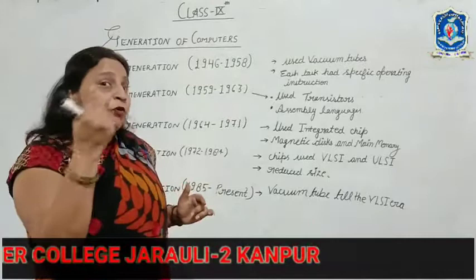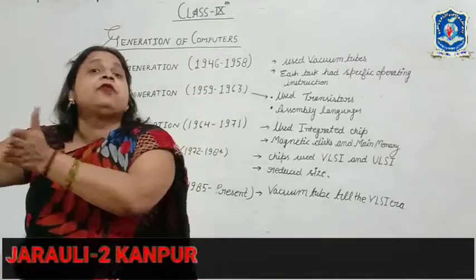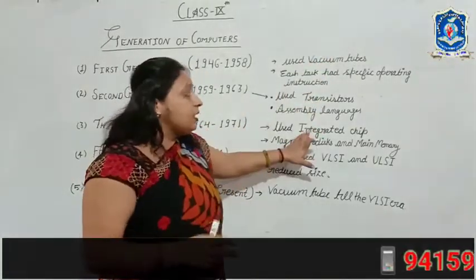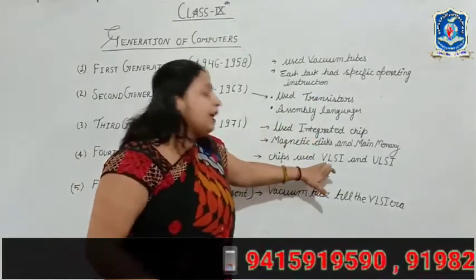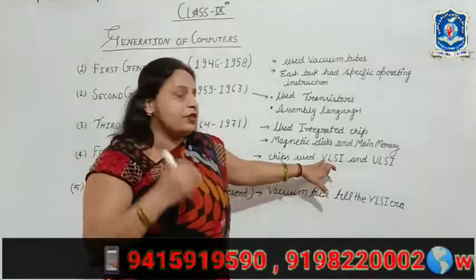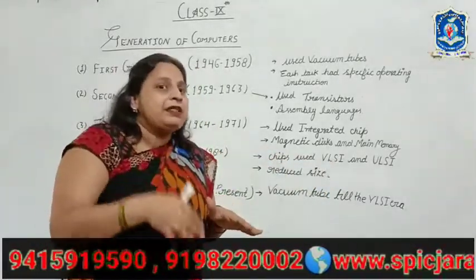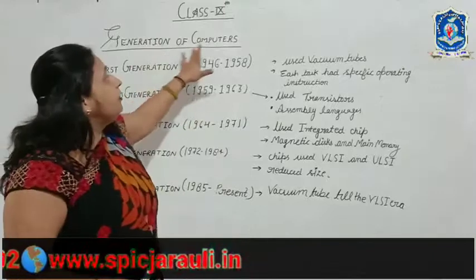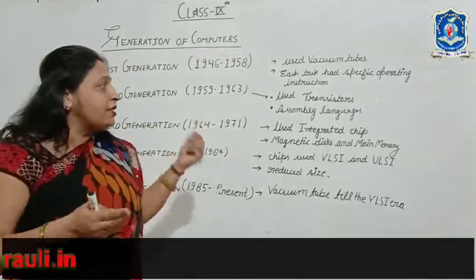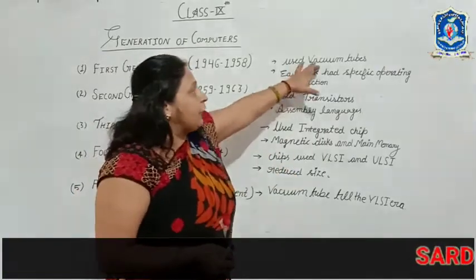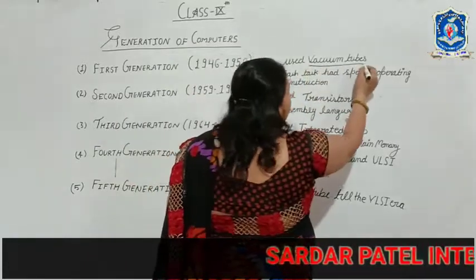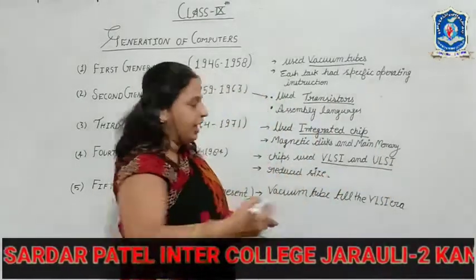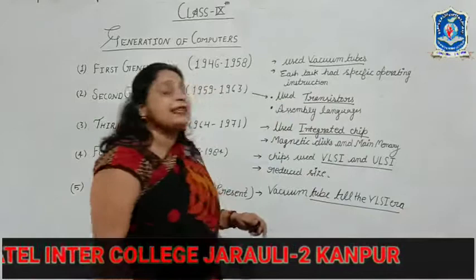To summarize the main differences between generations: the 1st generation used vacuum tubes; the 2nd generation used transistors; the 3rd generation used integrated chips; the 4th generation used VLSI and ULSI, which reduced the size further; and right now in the 5th generation, we are still using VLSI technology.